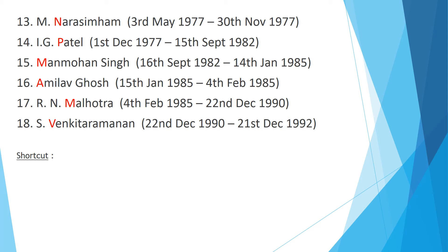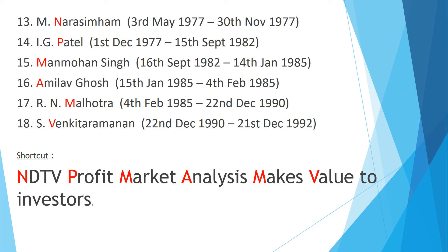The thirteenth RBI governor is M. Narasimham. Then I.G. Patel became the RBI governor. After I.G. Patel, Mr. Manmohan Singh became the RBI governor. The sixteenth RBI governor is Amal Ghosh, the seventeenth is R.N. Malhotra, and S. Venkatraman became the eighteenth RBI governor. The shortcut trick to remember these six governors is: 'NDTV profit market analysis makes value to investors' — N for Narasimham, P for Patel, M for Manmohan Singh, A for Amal Ghosh, M in makes for Malhotra, and V in value for Venkatraman.